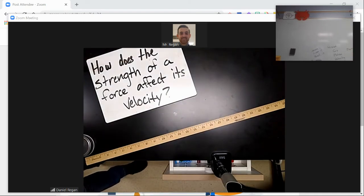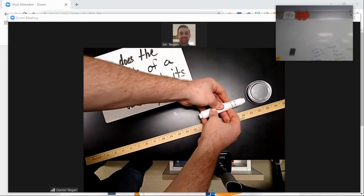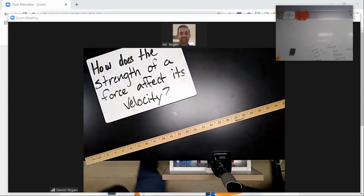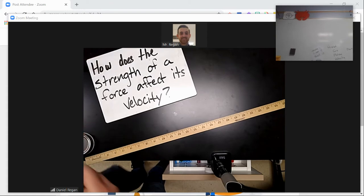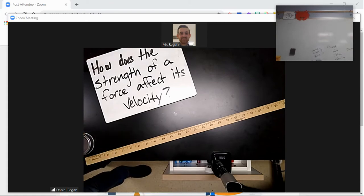Now we have strength number two. Takes a little over one, almost two full strikes to get it the length of our lap. And then we have our third and final one.